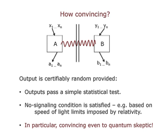How convincing is the fact that the output is random? The model is: the output is certifiably random provided first the outputs pass that simple statistical CHSH-like test, and second, no-signaling is satisfied — the two boxes really cannot talk to each other. If you want to be dead certain and base it on physics in principle, you do the measurements so close together that light didn't have a chance to go from one to the other.